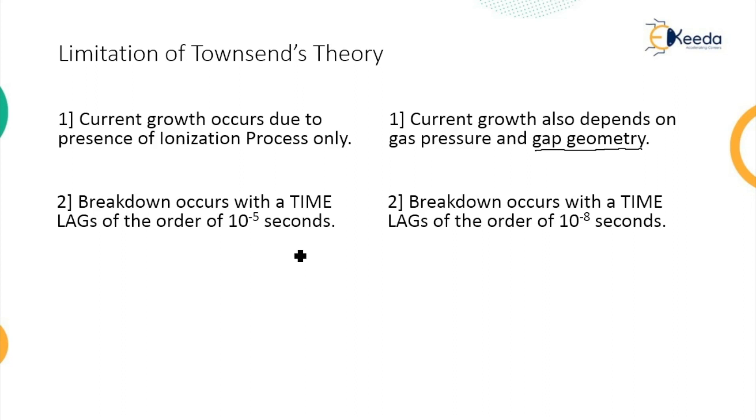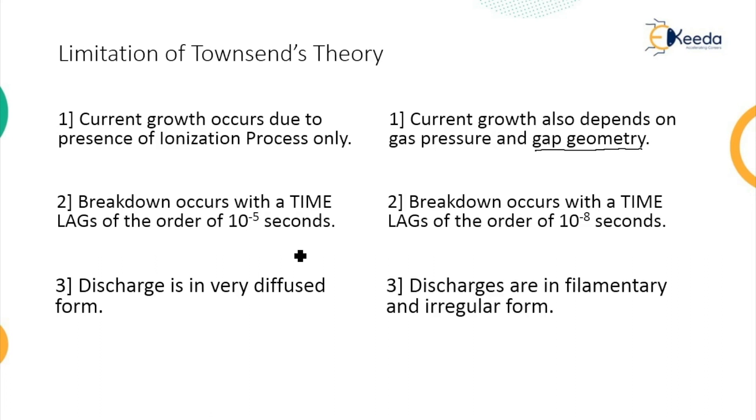Another limitation to that is according to Townsend's, the discharge which occurs in between the contacts of the electrodes is a diffused form, but in practice it is filamentary and irregular. So filamentary means it is like this and irregular means we get one filament then another filament, third filament and so on. So therefore the discharge, the spark or an arc which forms between the electrodes due to the breakdown is either filamentary or irregular.